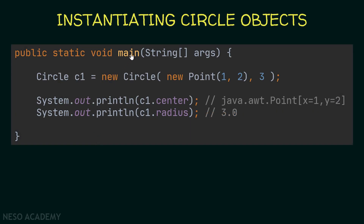Now let's use this constructor to create Circle objects. Inside the main method, I'm creating a Circle c1 equal to a new Circle, passing two arguments: a Point with x=1 and y=2, and an integer value that gets cast to a double. I'm then printing the center and radius of c1, and this is the output — showing how constructors initialize object attributes.